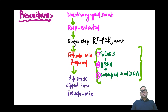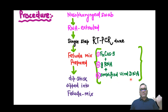By this process, the Feluda mix is prepared. Examiners can ask you: what is the Feluda mix? The Feluda mix consists of three things: Cas9, guide RNA, and amplified viral DNA. We then dip the dipstick into the Feluda mix.